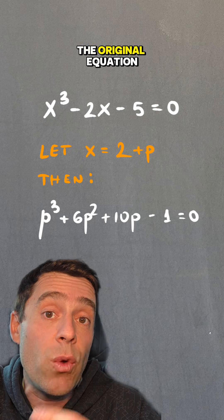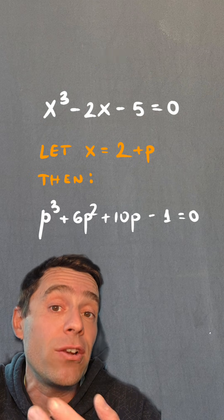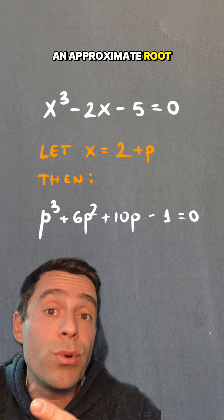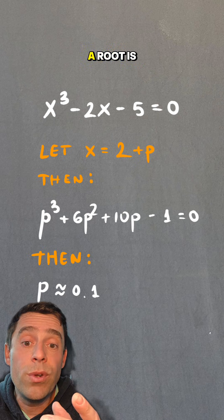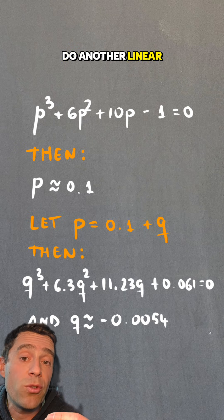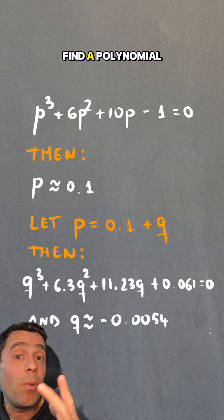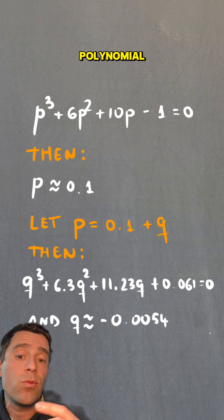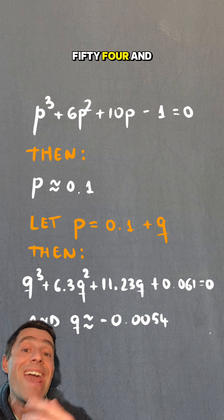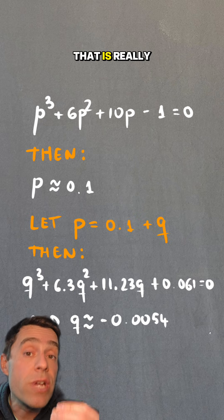Let x = 2 + p, where p is the perturbation factor, and plug it back into the original equation. We get a new equation p³ + 6p² + 10p − 1 = 0. Newton finds a root of about p ≈ 0.1. We then do another linear perturbation: let p = 0.1 + q, find a polynomial in q, and find its root, which is approximately q ≈ −0.0054. Then just keep going in this very ad hoc, messy way.